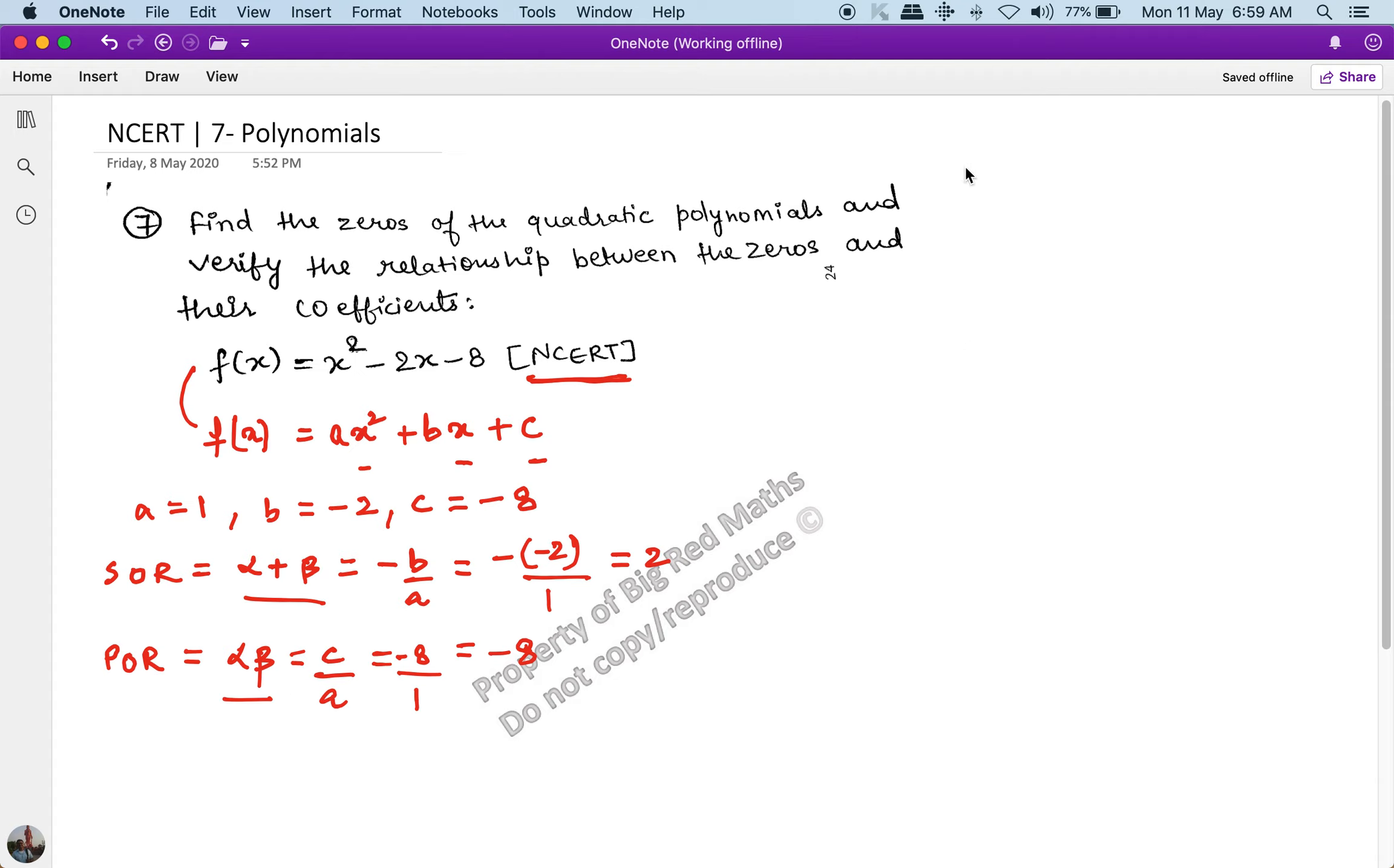Now let's start solving the question by finding the zeros. If f(x) is given as x² - 2x - 8, I can factorize this. When I factorize this, I can write it as f(x) = x² - 4x + 2x - 8. We have studied this concept in the factorization chapter of class 9.